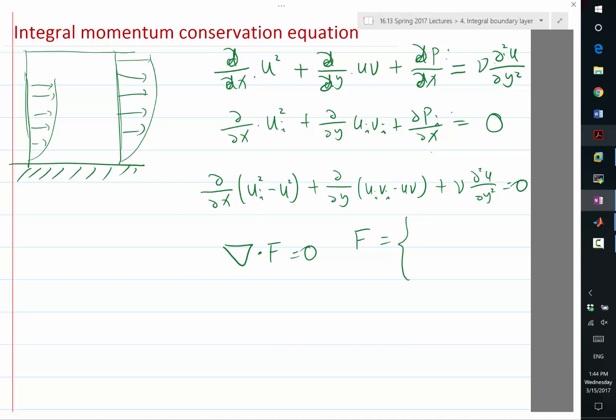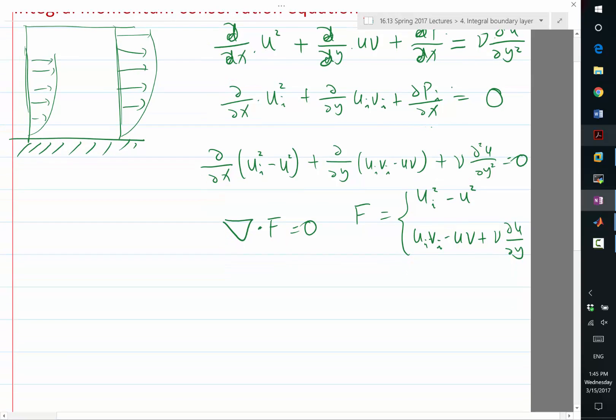So can I write this equation as the divergence of a vector equal to zero? Yeah, x term is ui square minus u square. And the y term? Ui vi minus uv plus nu du by dy. Yes. I can write the derivative, a second order derivative, as the derivative of derivative. So that way I can write a vector f and say the divergence of that f is equal to zero. Next we use what? Not Stokes' theorem, but the other one. We use Gauss's theorem to convert this into surface integrals. So this is equal to zero. The integration over this omega is also going to be equal to zero.